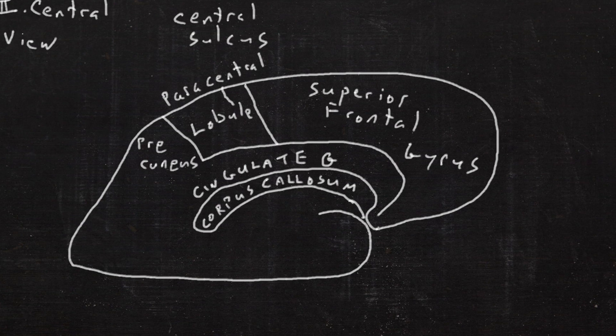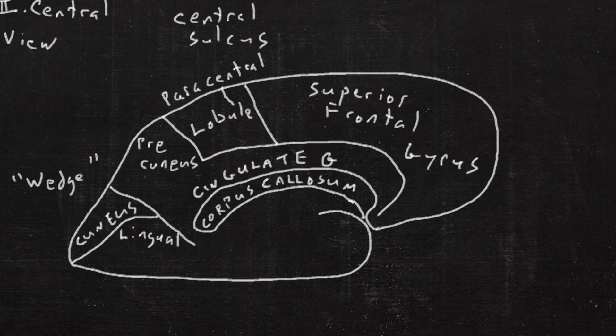The paracentral lobule around the central sulcus, then the precuneus, which is in front of the cuneus, which means wedge, which sits on top of the lingual gyrus, which means tongue.